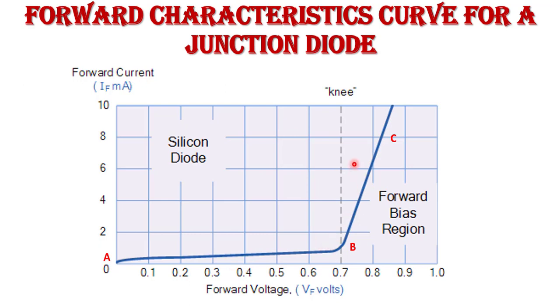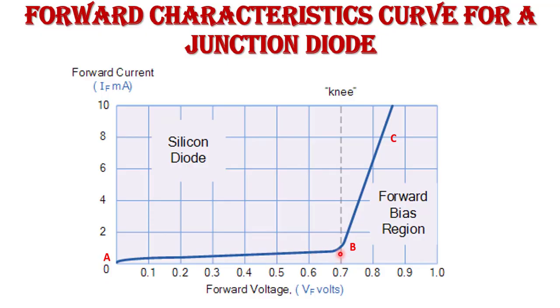In region AB, a small forward voltage is applied and a small forward current of a few milliamperes flows. When we increase the applied voltage, a point comes where the depletion region collapses and resistance is very low — this voltage is called the cut-in voltage. When the applied voltage equals the cut-in voltage, a large forward current suddenly flows. A series resistor is connected to limit this current, which flows from anode to cathode. For silicon diode, the cut-in voltage is 0.7V; for germanium diode it is 0.3V.